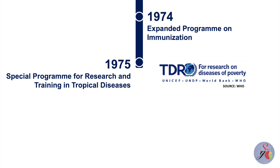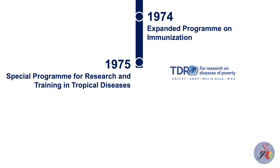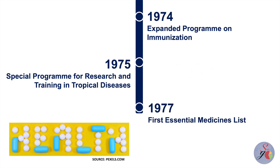The programme provides tools to tackle neglected diseases and to increase research capacity in disease-endemic countries. By 2016, five of the eight diseases that the programme was created to support research on are close to elimination. Two years later, in 1977, the first essential medicines list was published.